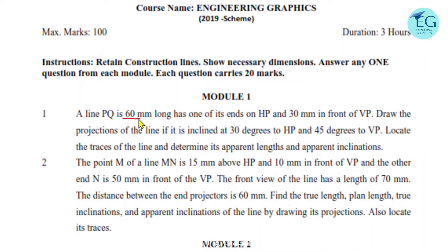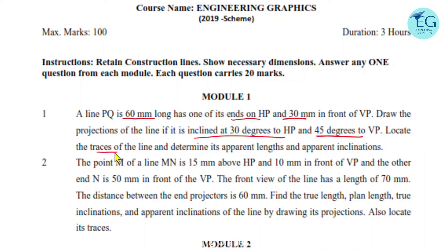A line PQ, 60mm long, has one of its ends on HP and 30mm in front of VP. Draw the projections of the line if it is inclined at 30 degrees to HP and 45 degrees to VP. Locate the traces of the line and determine its apparent length and apparent inclination. The projection of the line is inclined to both HP and VP.